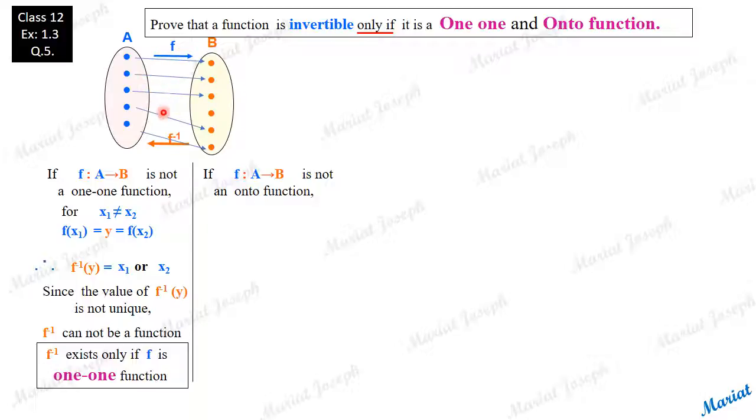If it is not onto function, in the codomain of f, there will be at least one element which is not an image. Here, this y element. Let us take a y element in the codomain which is not an image. If f is not an onto function, this kind of element will surely be there.